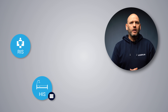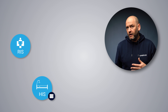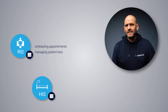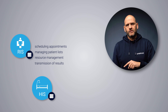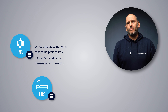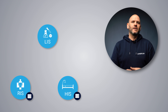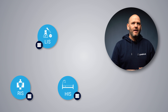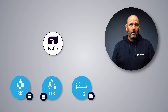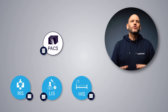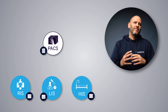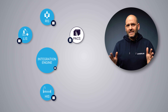A HIS often operates with several specialized subsystems. The Radiology Information System, or RIS, handles the radiology workflows — electronic management of imaging departments, including scheduling imaging appointments, managing patient lists, resource management, and the transmission of results of analysis of medical images. The Laboratory Information Systems, or LIS, support the data exchange between the hospital and laboratories where tests are carried out on patient samples. Then you have the PACS, or Picture Archiving and Communication System, which is a system for storing and accessing image data from modalities or imaging devices.